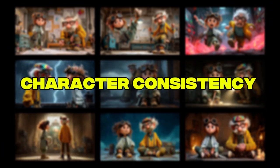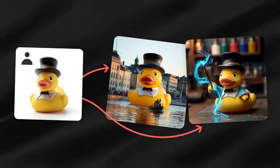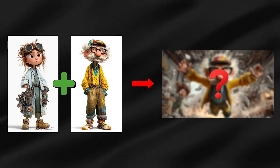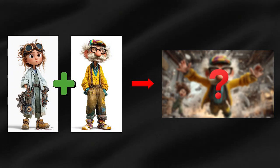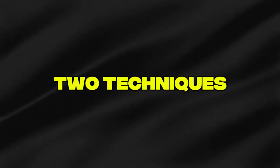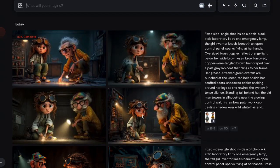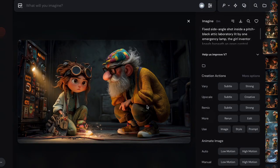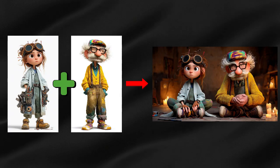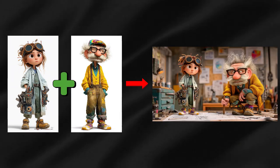Multiple character consistency in Midjourney? Most creators think it's impossible. OmniReference nails single characters, but maintaining multiple distinct characters in one scene — that's where everyone hits the wall. While others give up or settle for inconsistent results, I've cracked the code. Two techniques: the stitching method and strategic prompting. Together, they bypass OmniReference's single image limitation completely. In this video, I'm showing you exactly how both work. Perfect multi-character consistency isn't just possible — it's about to become your new standard.